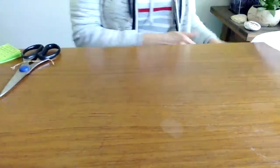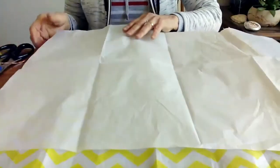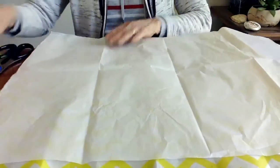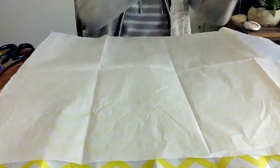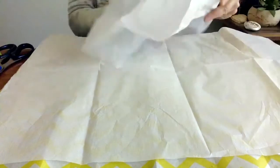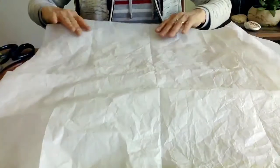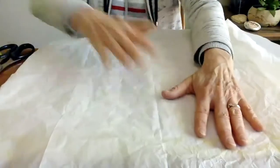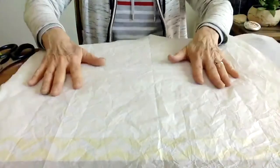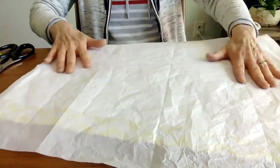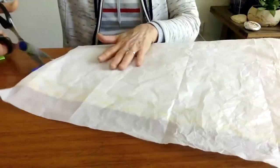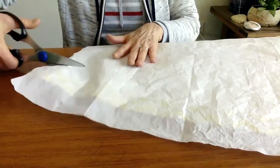I'm going to show you how to do this on my table. The first thing I do is lay out my tissue paper, one sheet on top of another, and you can use as many sheets as you like.